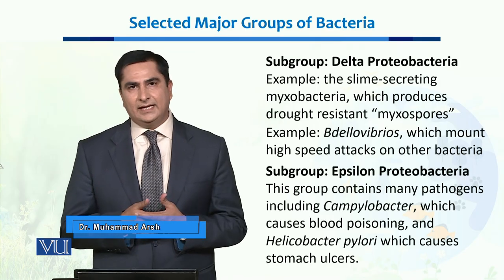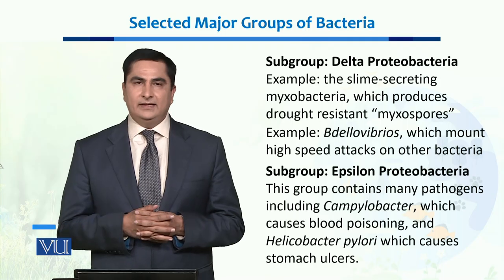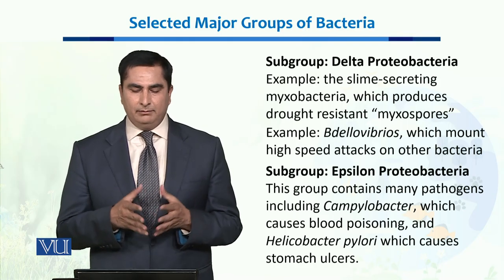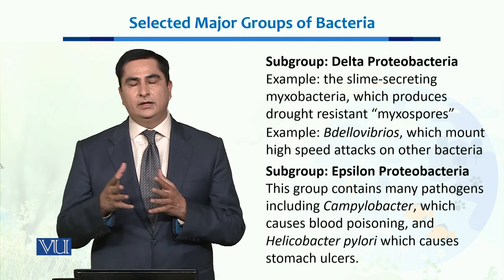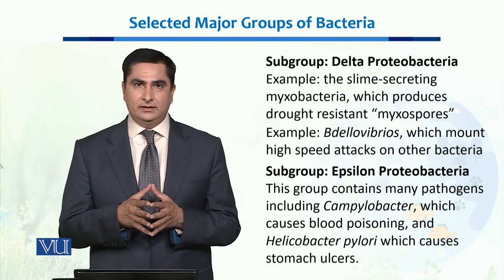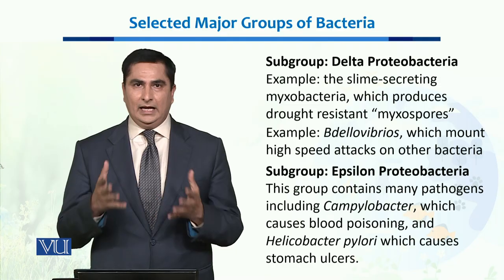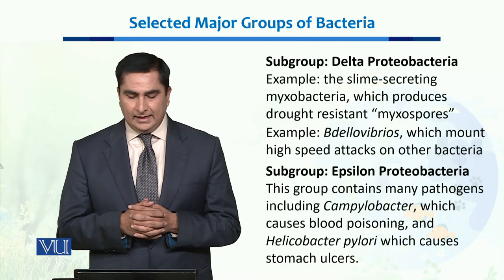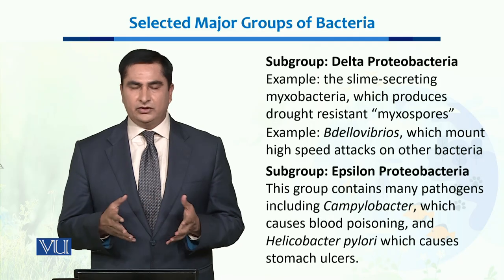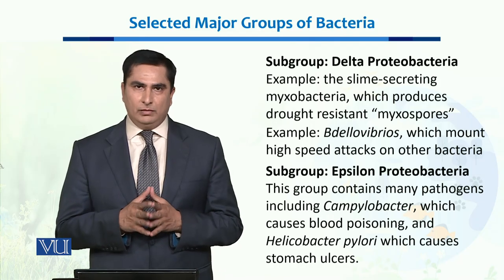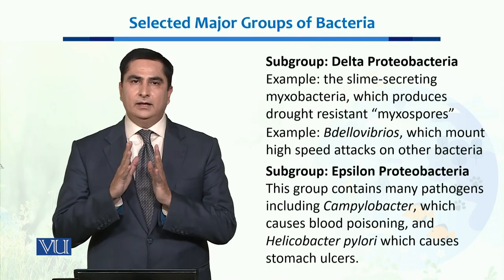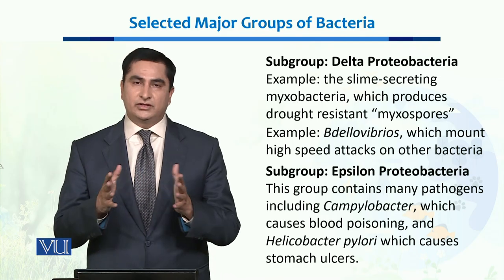When we talk about delta proteobacteria, examples include myxobacteria, which produce myxospores that are drought resistant and help them survive for long periods. Another example is Bdellovibrio, which is known to mount attacks on other bacteria in order to compete for resources.